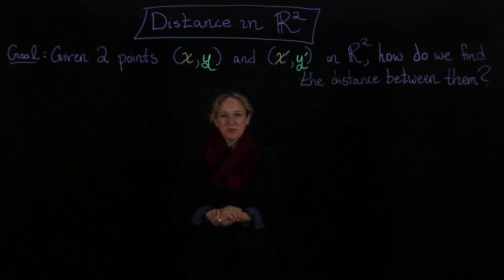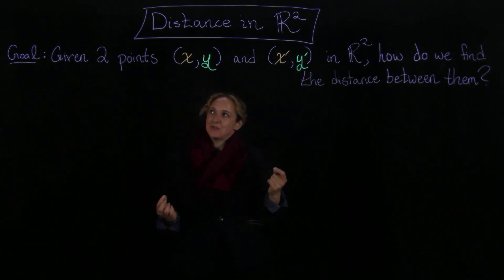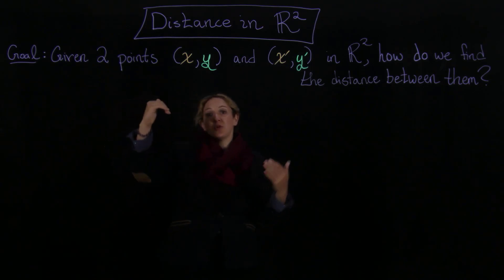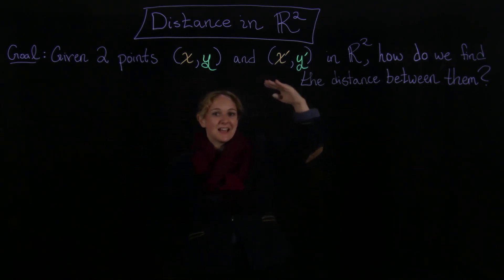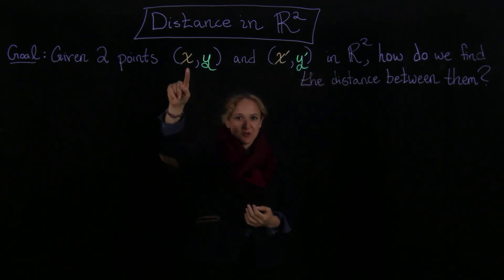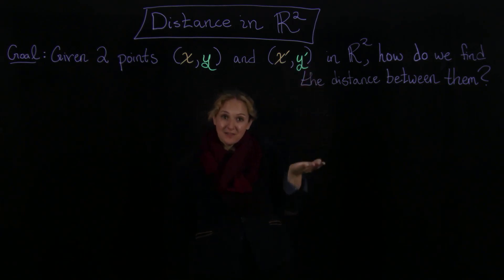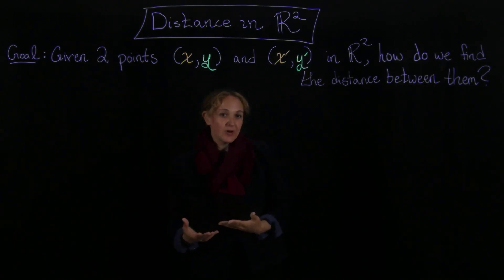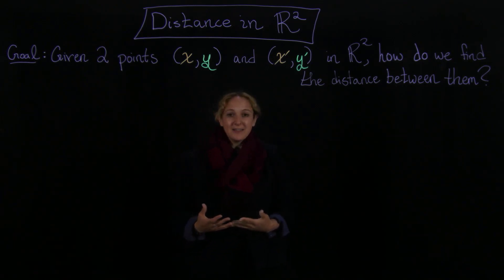Welcome. In this lecture we want to talk about how, given two points in R2, you're going to find the distance between them. So here's a goal: given two points, we're going to call them (x, y) and (x', y') — that's the first and second coordinate of one point and the first and second coordinate of the other point. Given two points (x, y) and (x', y') in the Euclidean plane R2, how are we going to find the distance between them?